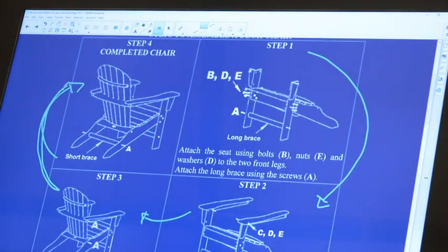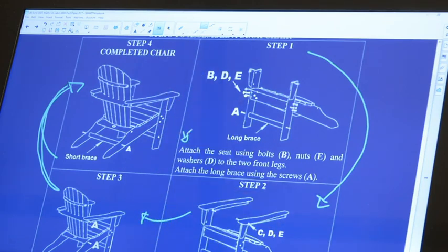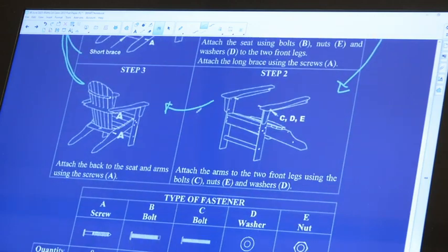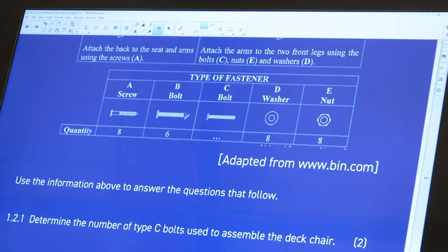When we are first assembling it, it says B, D, E, A, and then we have the instruction also given here which says that we need to attach the seat using bolt B and nuts E and washers D to the front legs. So when it comes to assembling questions, don't panic that much because I know that you are going to kill it.